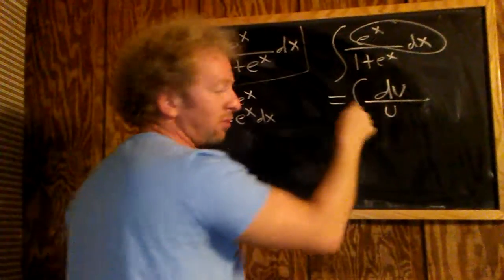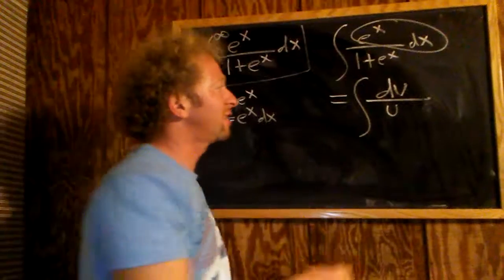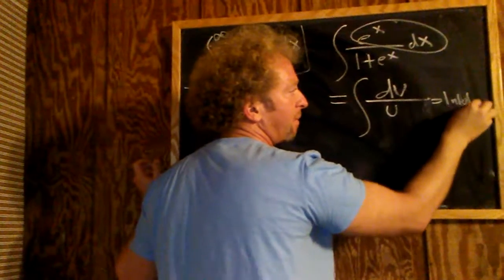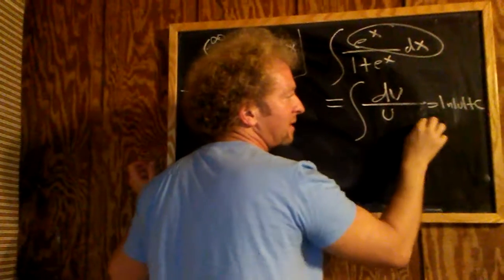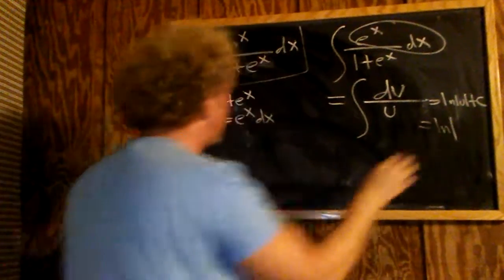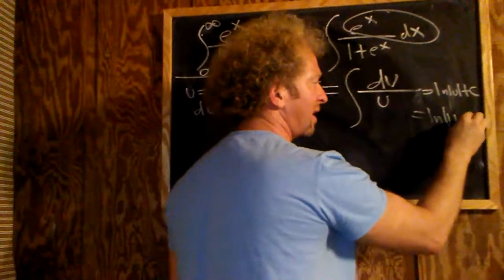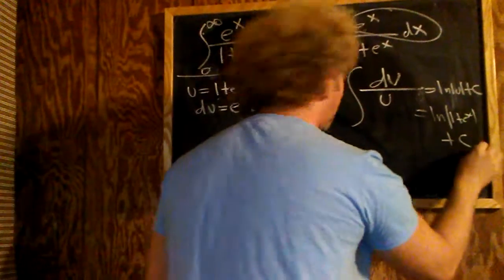Well you have du over u, or 1 over u times du, so that integrates to the natural log. Absolute value of u plus a constant c. And that's equal to the natural log of, and u, we said was 1 plus e to the x, so we simply get 1 plus e to the x. 1 plus e to the x, plus c.